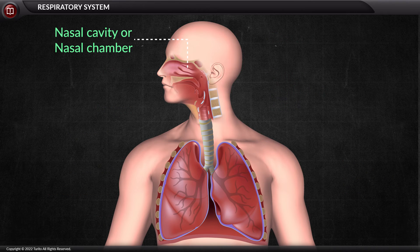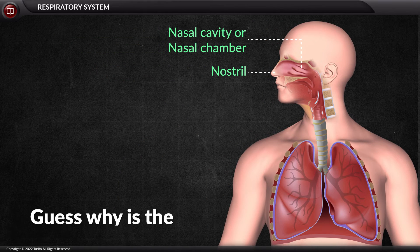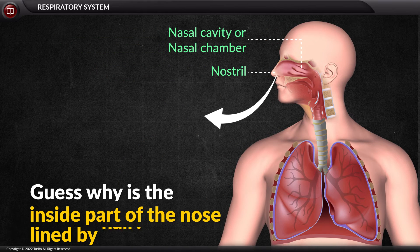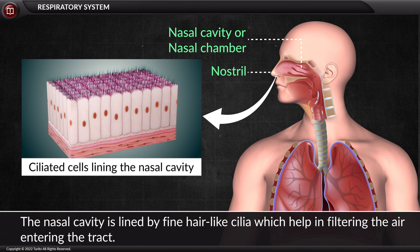The first part is the nasal cavity, opened by the external nares, also called nostrils. The nasal cavity is lined by fine hair-like cilia, which help filter the air entering the tract.